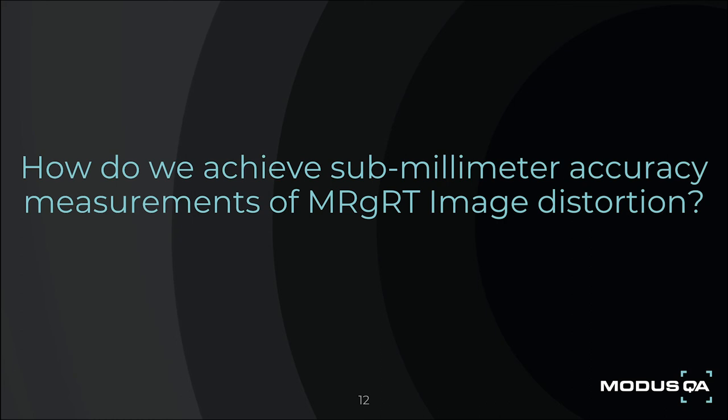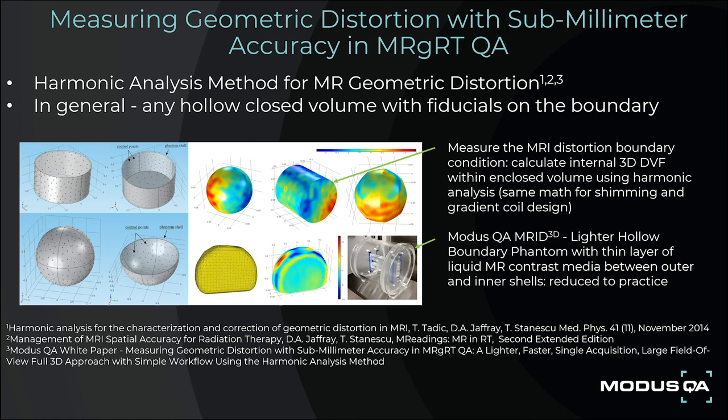How do we achieve sub-millimeter accuracy measurements of MRGRT image distortion? The harmonic analysis method is a fundamental analytical tool for well-defined boundary value problems such as MRI gradient coil design, gradient nonlinearity distortion correction, and B0 shimming. The harmonic analysis method has recently been adapted for sparse and highly efficient sampling and measurement of inherent MRI B0 and gradient nonlinearity system distortion. In general, any hollow closed volume with boundary fiducials can be used. The measured boundary condition on an enclosed hollow volume — a cylinder, for example — if sufficiently sampled, completely defines the conditions within the enclosed volume.